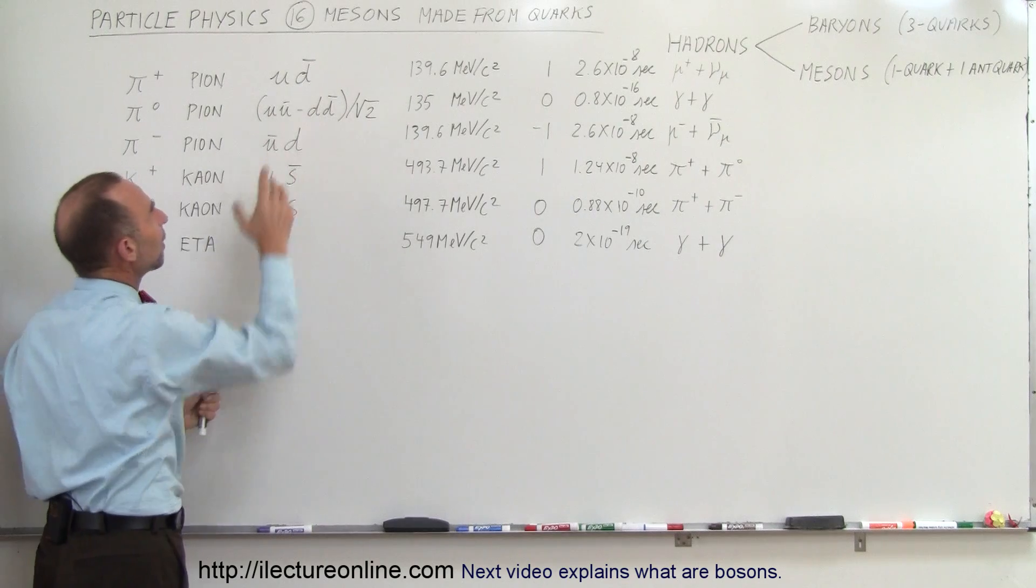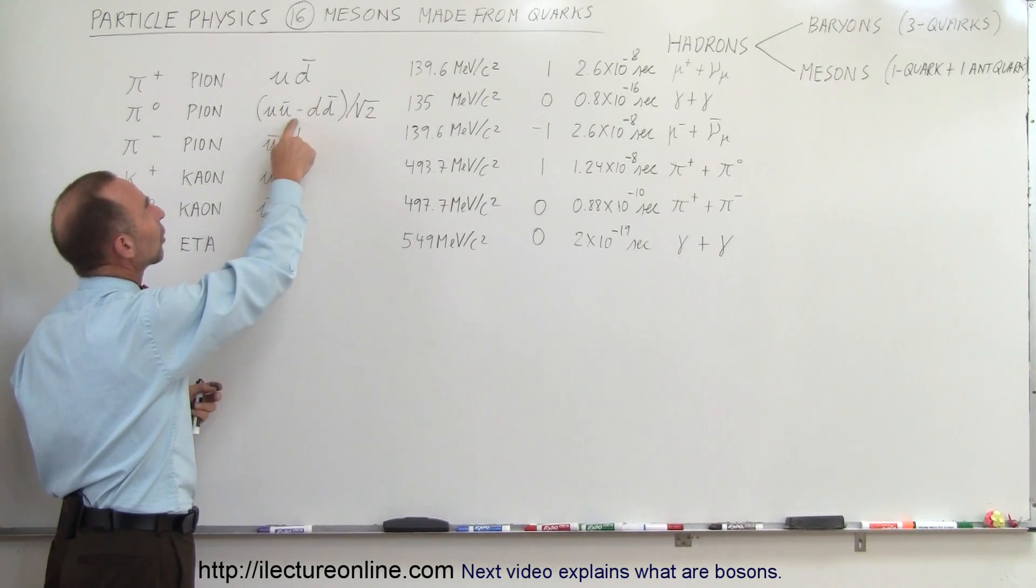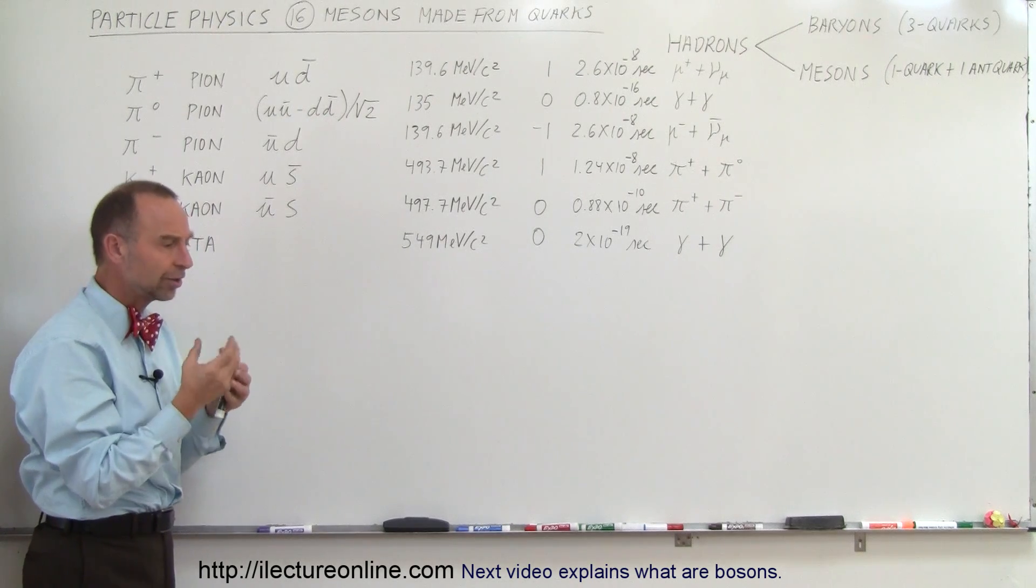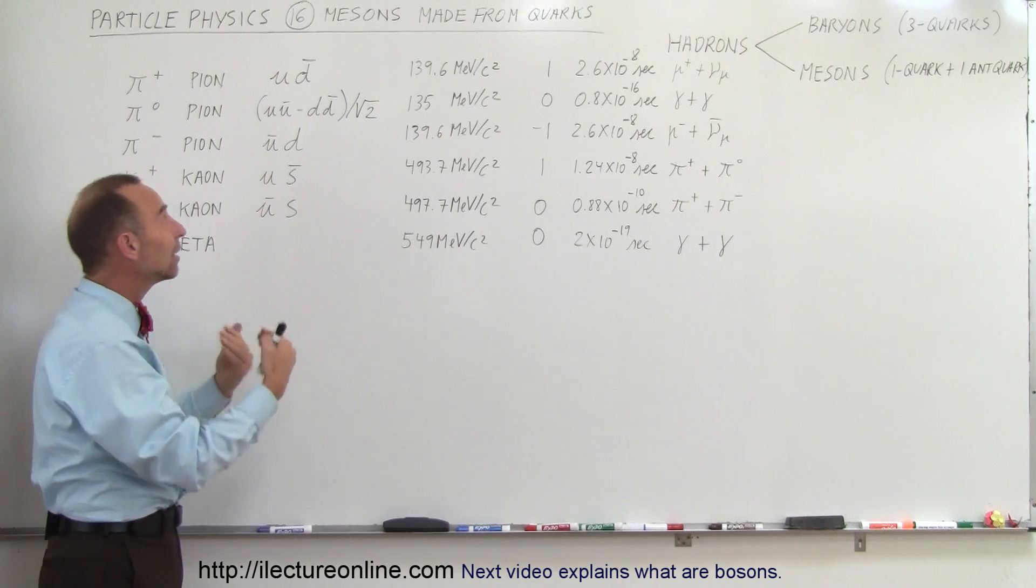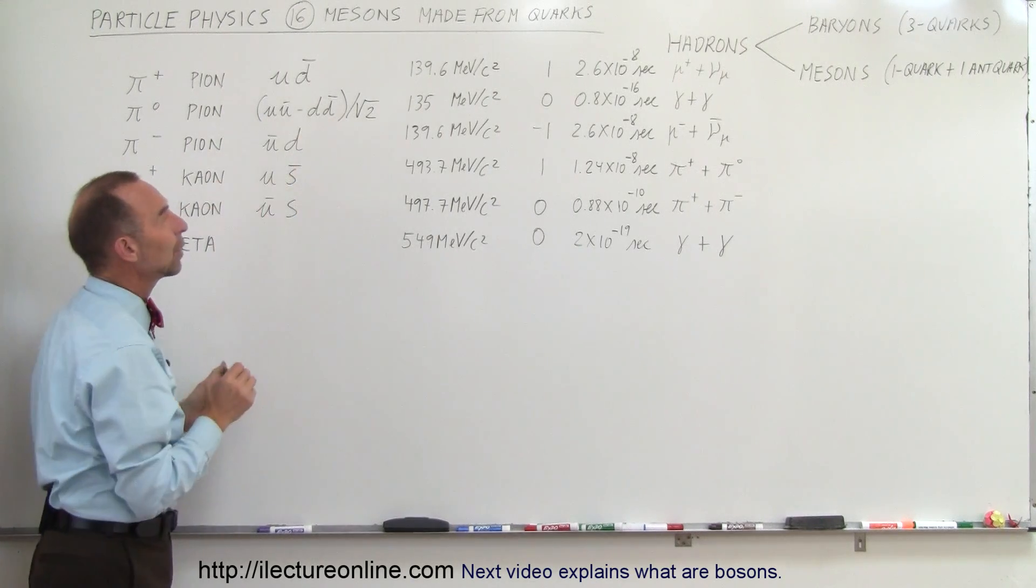Now you can see that the neutral pion has a very interesting makeup. An up quark and an anti-up quark, a down quark and an anti-down quark, there's a minus in there. So this is a result that we got from calculating the energy state of a neutral pion, and that's the equation that we came up with.